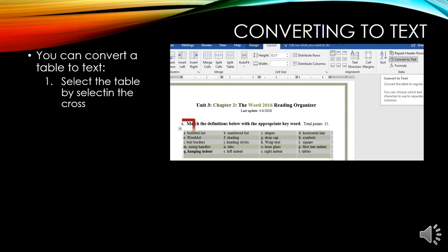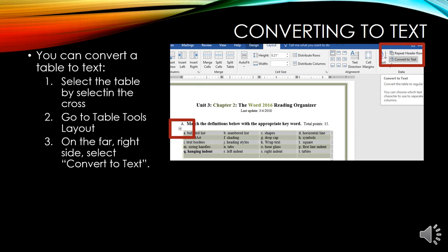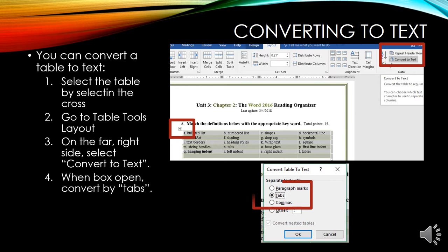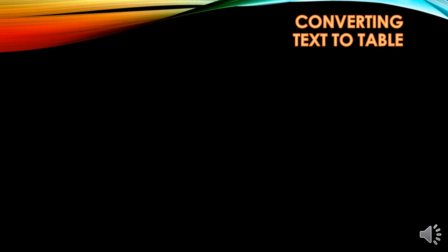Converting a table to text. Select the table by clicking the cross, then go to Table Tools Layout. On the far right side, select Convert to Text. When the box opens, convert the table to text by selecting Tabs — that is the most common option. Click OK and your text will no longer be in a table.